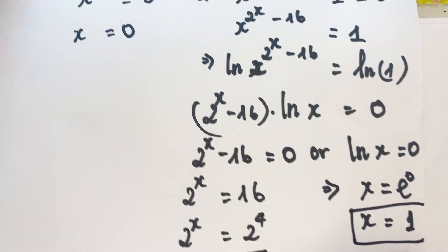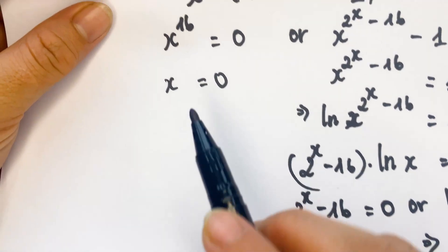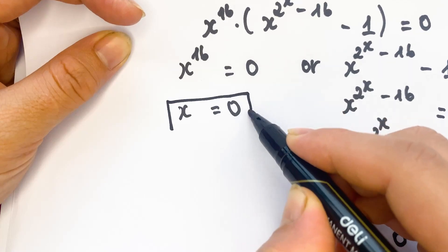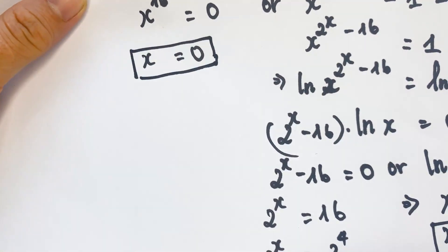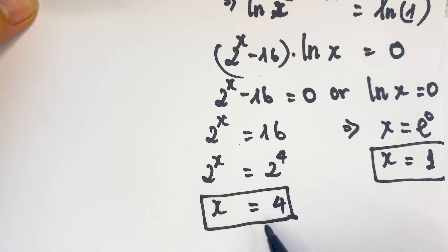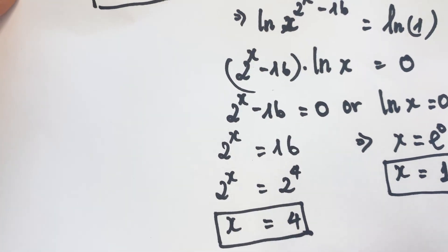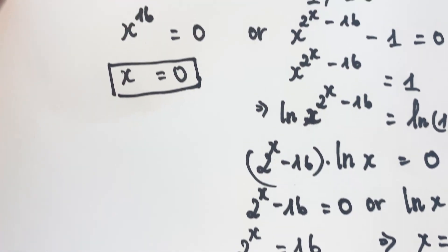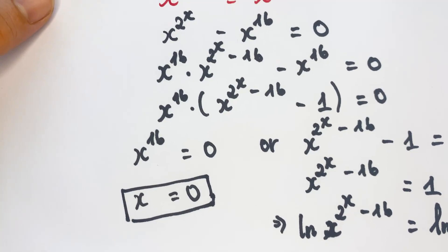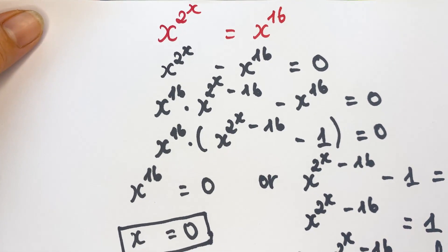So we have three solutions: firstly x equals 0, secondly x equals 4, and x equals 1. Thank you for watching my video, don't forget to subscribe to my channel. Love you all, bye-bye!